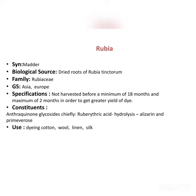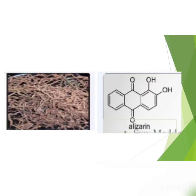Next drug: Rubia. Synonym: Madder. Biological source: dried roots of Rubia tinctorum; family Rubiaceae. Geographical source: Asia and Europe. Specifications: not harvested before a minimum of 18 months and maximum of 2 years in order to get greater yield of dye. Chemical constituents: anthraquinone glycosides, chiefly ruberythric acid, which on hydrolysis yields alizarin and primaverose. Uses: dyeing cotton, wool, and linen.